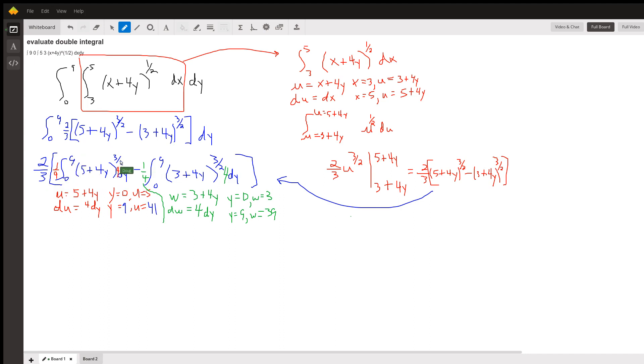5 plus 4y to the three-halves dy and 3 plus 4y to the three-halves. Then I used substitution to change the limits of integration. In the first integral, I let u equal 5 plus 4y.